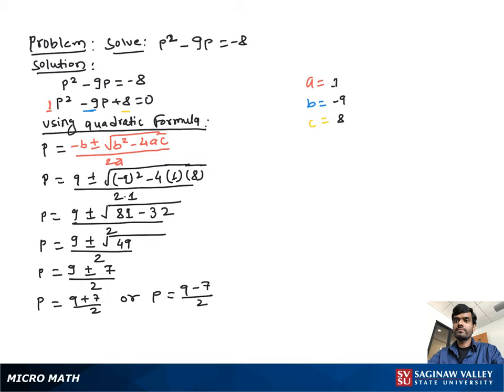Now solving each part: 9 + 7 = 16 over 2, which is equal to 8. Here 9 - 7 = 2 over 2, which is equal to 1. So our final answer is p = 8 or p = 1.